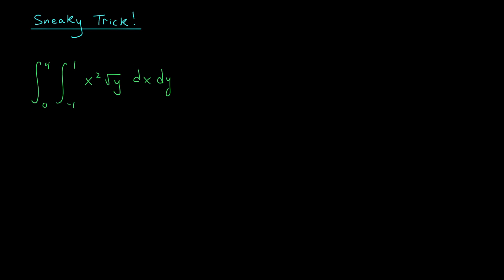I'd like to end this video by pointing out a sneaky little trick that some of you may have noticed during the last computation. Remember, we were computing this double integral, and we started with the integral on the inside. The integral from minus 1 to 1 of x squared root y dx. We said that root y could be treated like a constant, right? And we know from calc 2 that constants can be pulled outside of the integral. So why don't we pull this root y term outside of our integral?